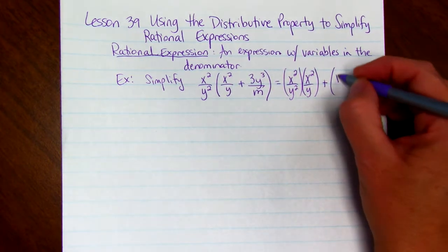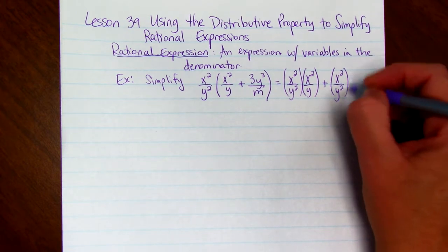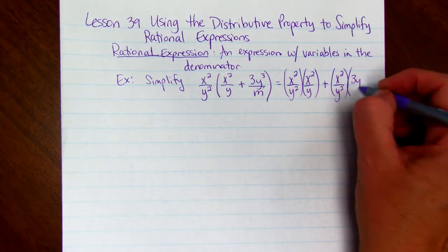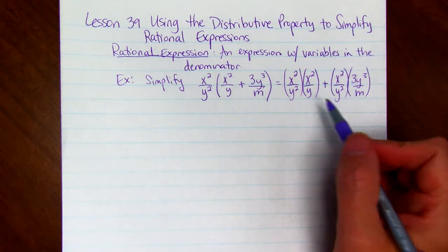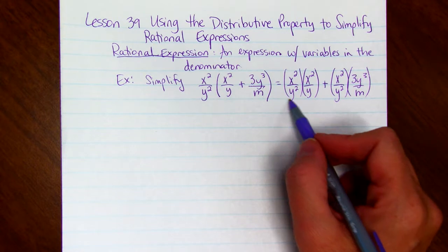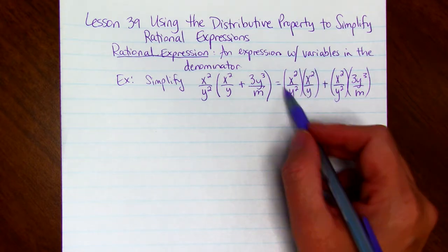Then we put plus, and we want x squared over y squared times 3y cubed over n. Then we simplify each of our products. We find the products.